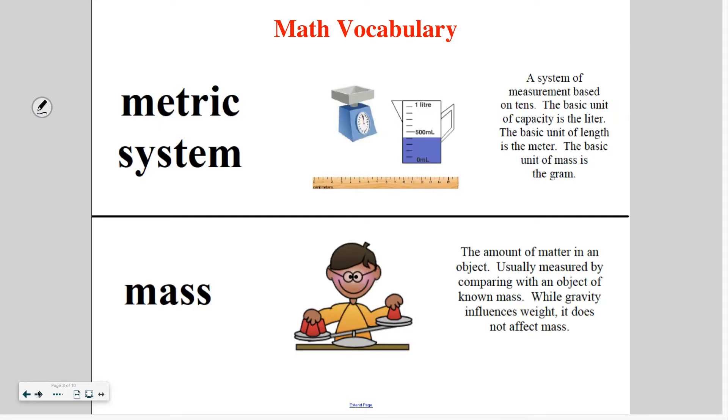So let's look at our vocabulary for today. The metric system is a system of measurement based on tens. And they each have basic units to measure capacity, which is generally liquids, how much space the liquid takes up, length, and mass, which is similar to weight but not exactly the same.